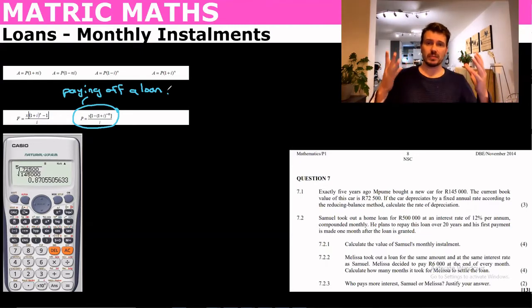You always start paying the loan one month after you were granted because you wouldn't pay on the day that you're given the loan. The formula takes into account that you start paying one month after the loan or whenever the payment period is. In this case it's monthly.